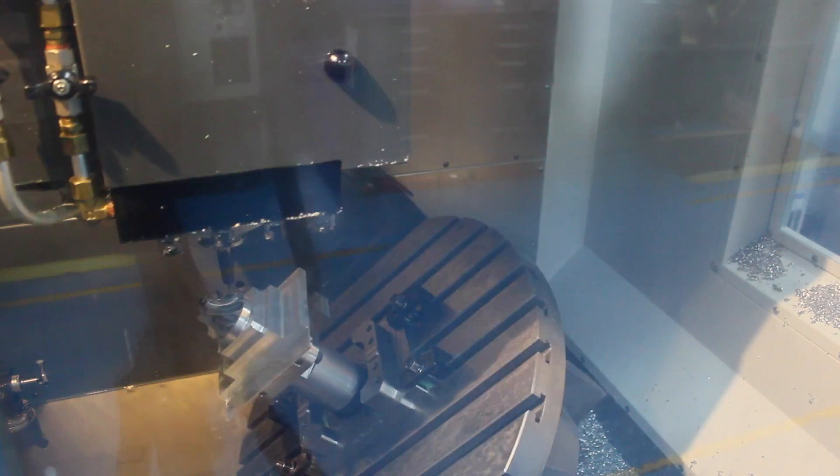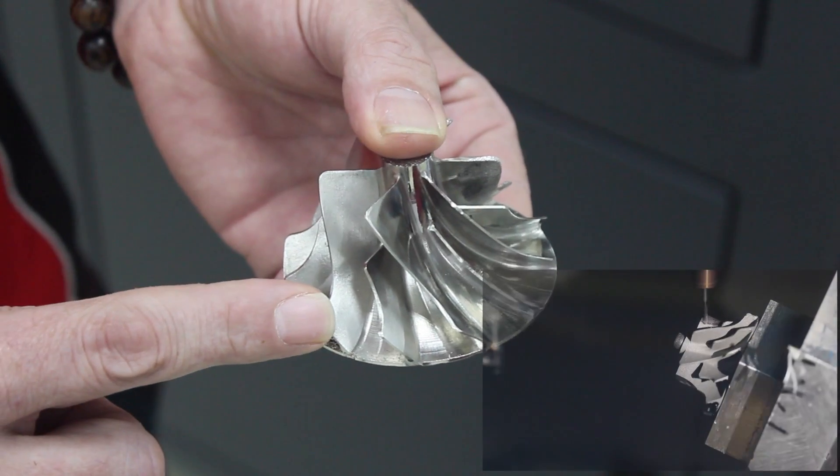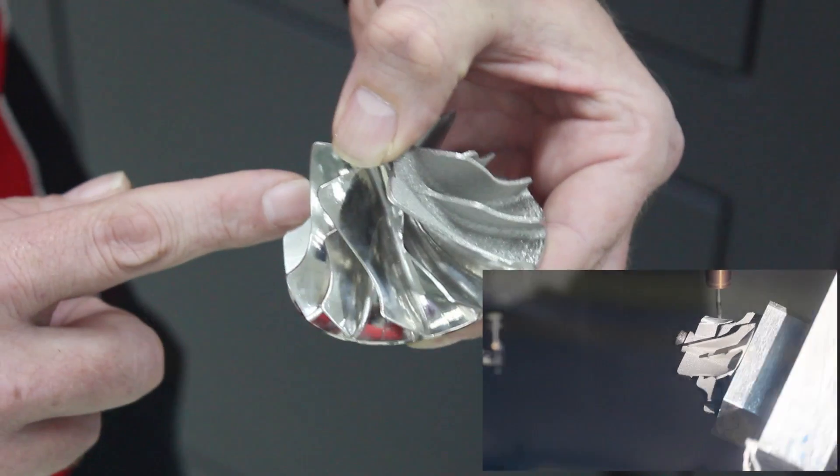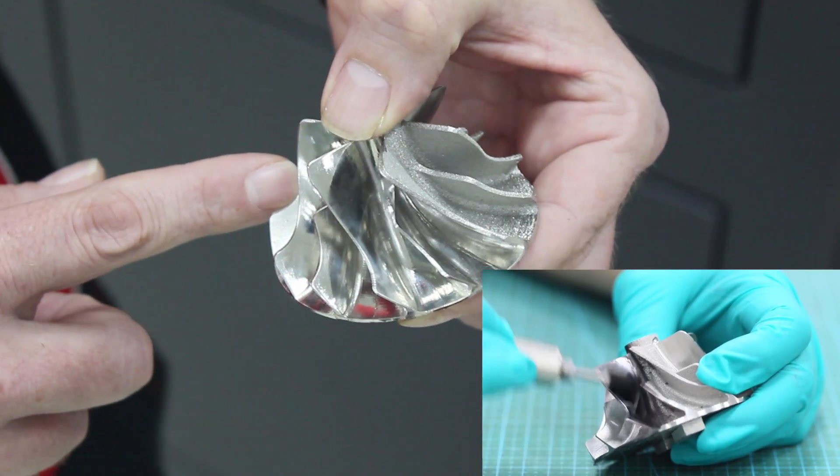When a part comes out of the printer, sometimes additional machining is required. In this case, we used our CNC 5-axis mill to produce a machined finish. The part was then further polished by hand in our model shop.